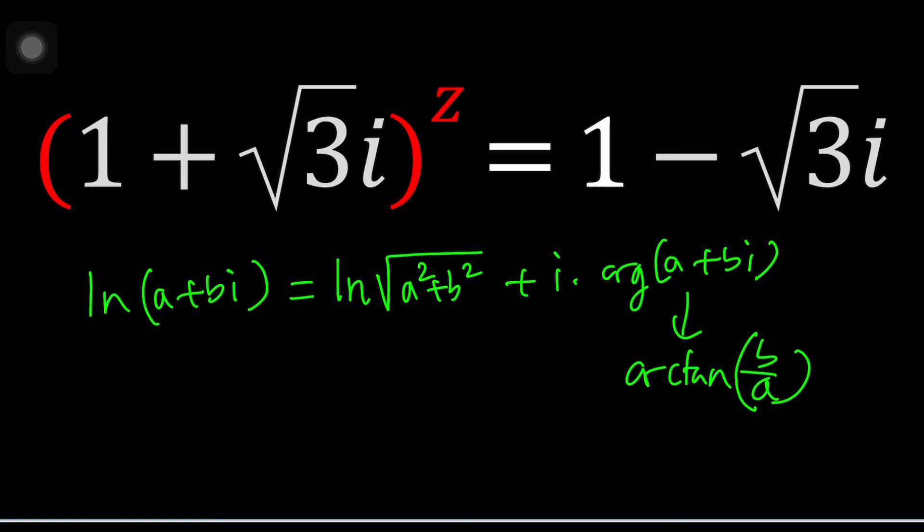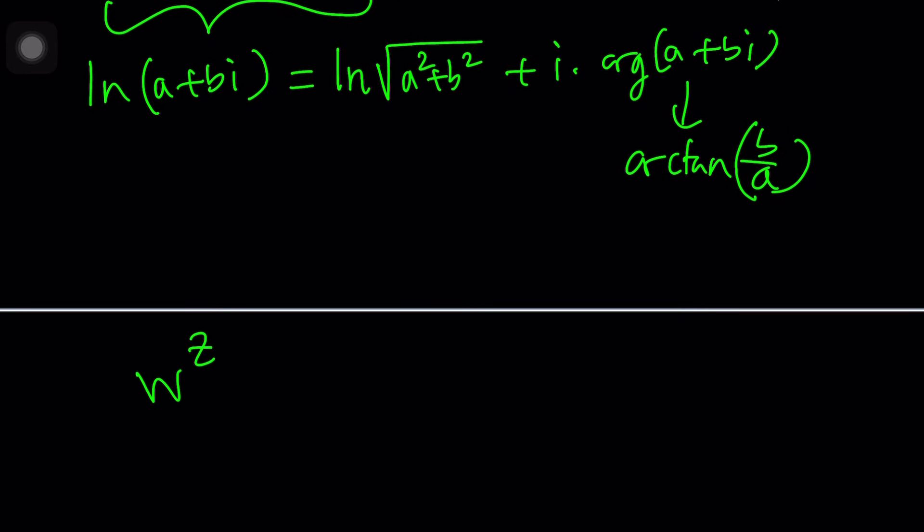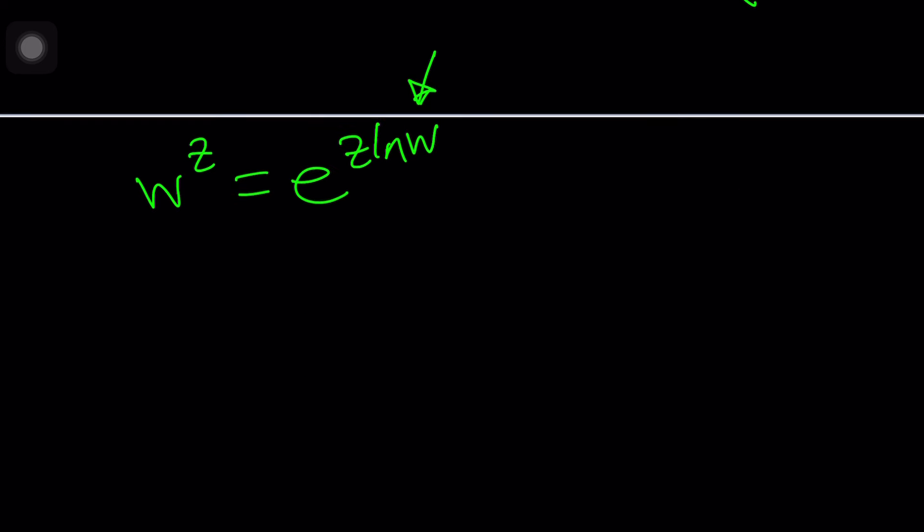So let's go ahead and see how we can solve this problem using complex exponentiation. So if you have a complex number like w to the power z, it can be written as e to the power z ln w. And as I said earlier, the natural log of a complex number is multi-valued, so we're going to have infinitely many values.